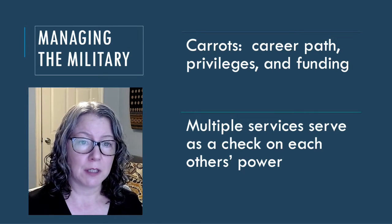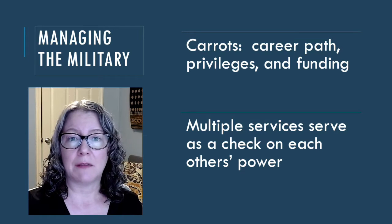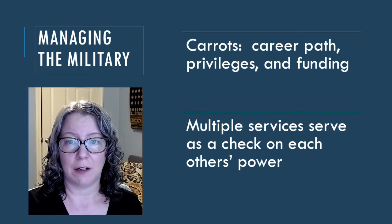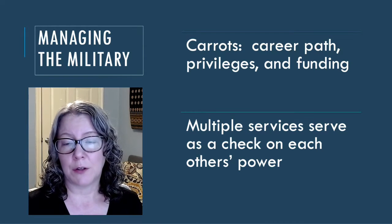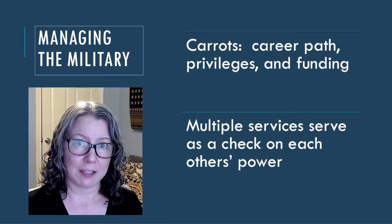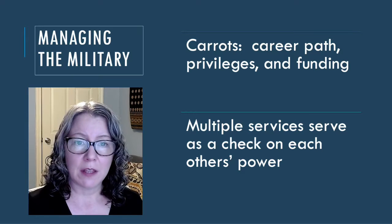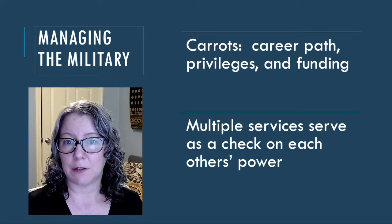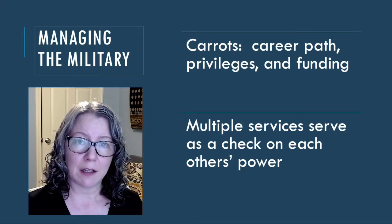Dictators tend to manage the military through carrots and institutions. They lavish attention and funds on their militaries, ensuring that soldiers have good career paths with good benefits. They also often invest in advanced weaponry, as the Shah did in Iran, who built the strongest and most technologically advanced military in the region in the 1960s and 70s. In addition, rather than attempt to punish military dissidents directly, dictators typically create new security services directly loyal to themselves.